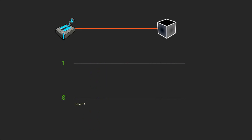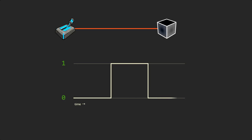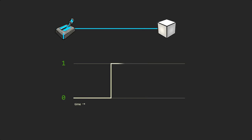For most simple circuits, inputs and outputs are straightforward. Turn the switch on, and the LED turns on. Turn the switch off, the LED turns off. As time passes, the signal changes from false to true, and then back to false again. Or if we're speaking binary, from zero to one, and back to zero again.